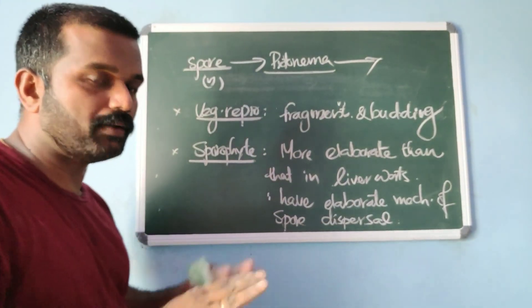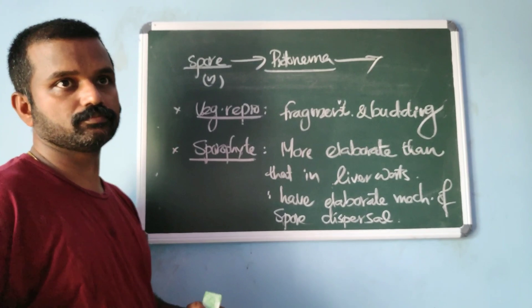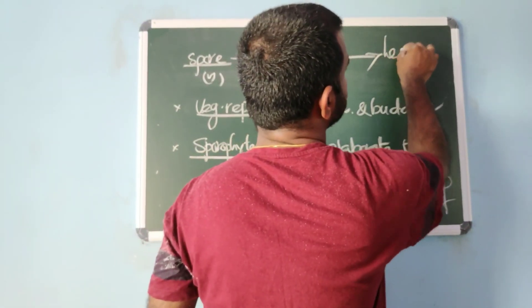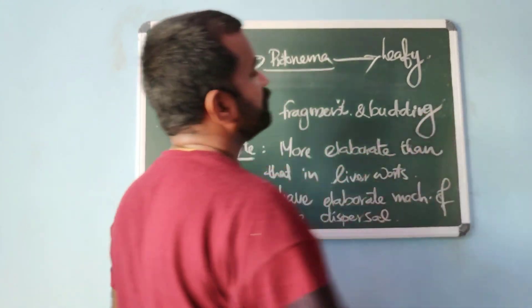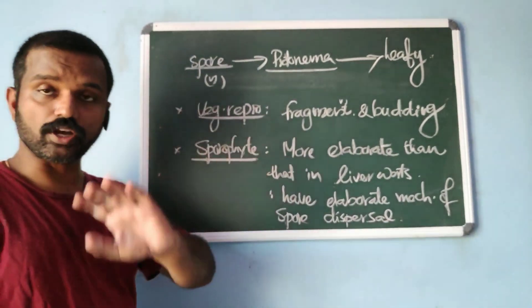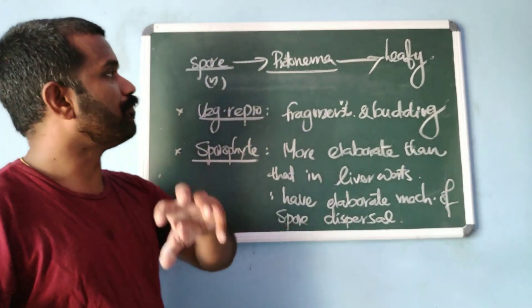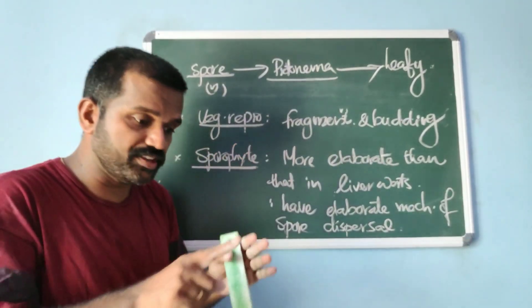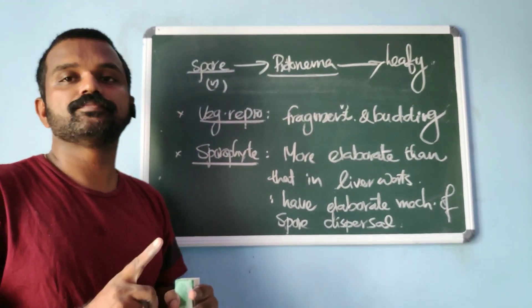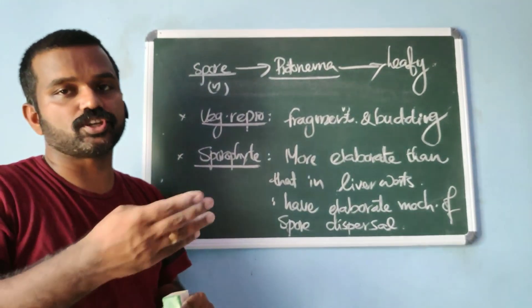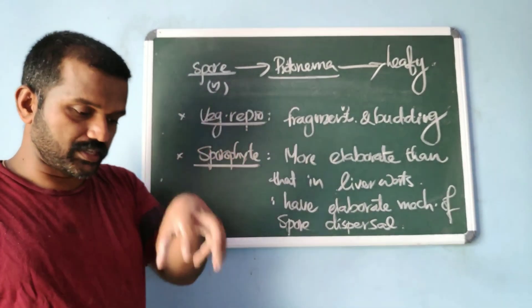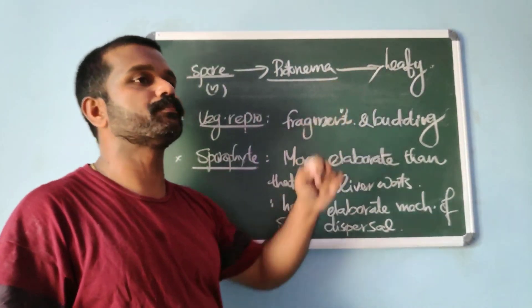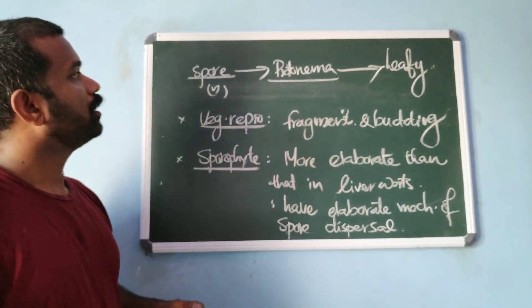From the protonema, lateral buds develop to form the next stage known as the leafy stage. The leafy stage is upright and erect, having spirally arranged leaves. The sex organs — antheridium and archegonium — are present in this leafy stage.